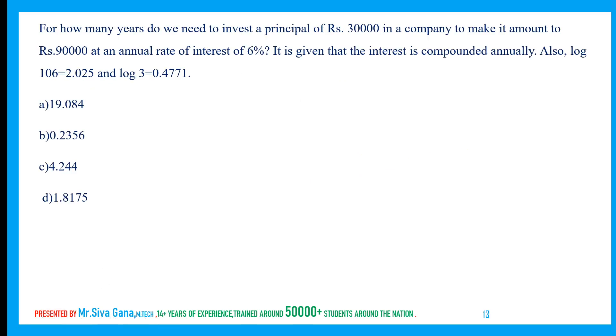For how many years do we invest a principal of 30,000 in a company to amount to 90,000 at an annual rate of interest of 6%? Interest is compounded annually. Just see how I am different from other trainers. Amount is 90,000, principal is 30,000, so principal becomes 3 times. In compound interest mode, this generally happens in 113 years. The principal becomes 3 times in compound interest case in 113 divided by rate of interest, which is 113/6, approximately 18.9 years, so the answer is 19.08.